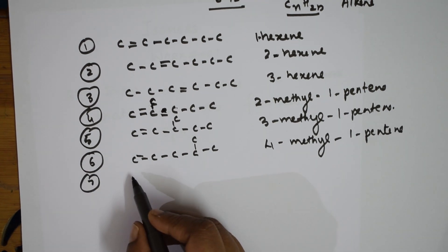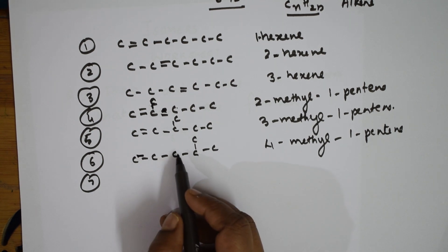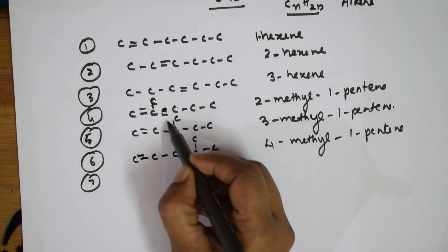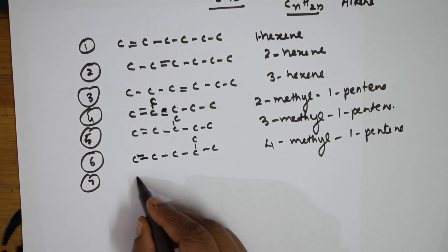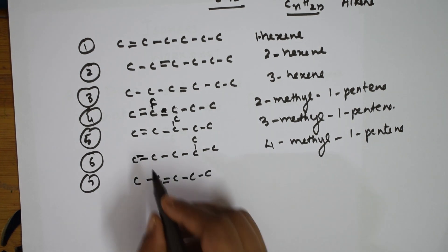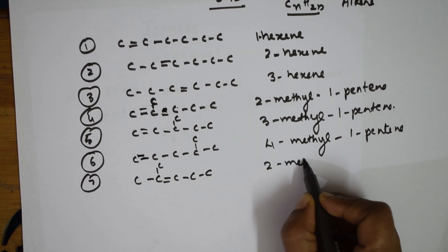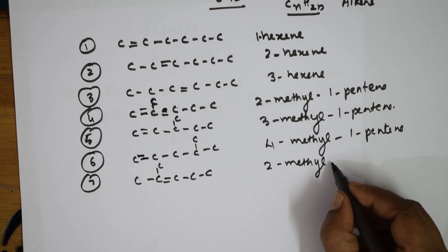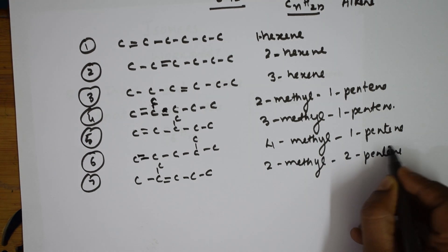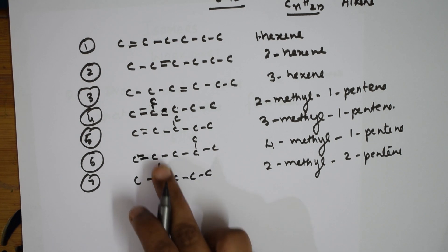Seventh isomer — now all 1-pentene combinations are over. I'm going to shift the double bond to the second position. Until now the double bond was at position one; now shift it to the second carbon. This becomes 2-methyl-2-pentene.